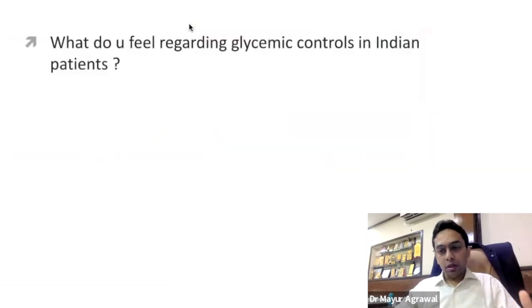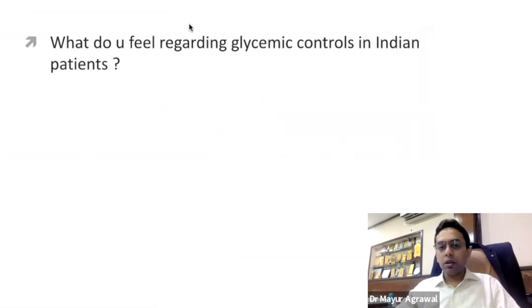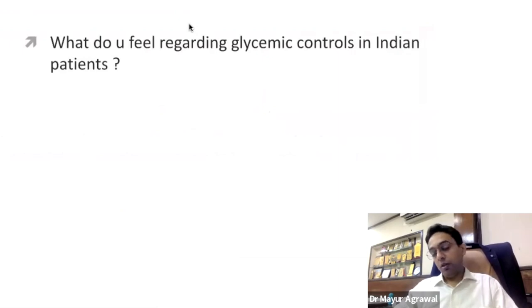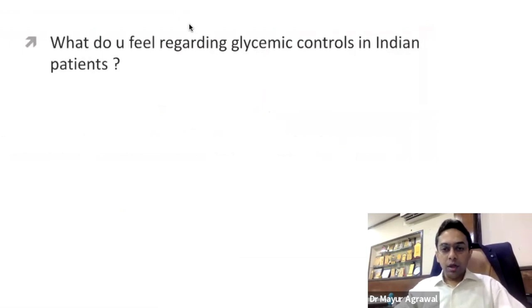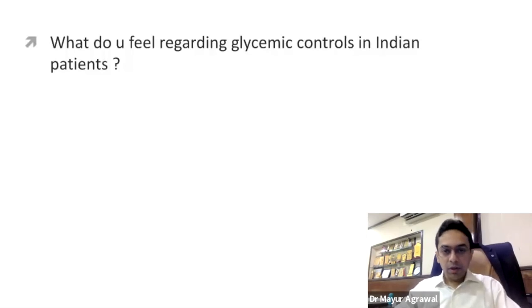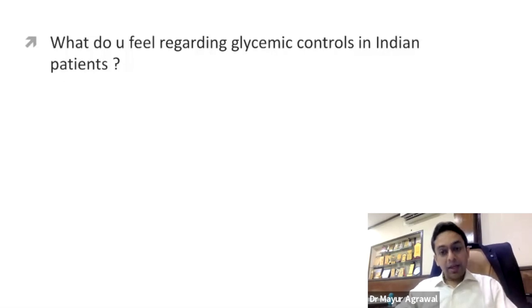This is an interactive session, so it will be a question-and-answer type. I'll ask and you can comment or come live. So what do you feel about overall glycemic control in an Indian patient — whether it is good enough or we are lagging behind? You can comment in the Q&A. We have a question here: fasting and PP within target range on OHA but HbA1c high — should we switch to insulin? Obviously not.